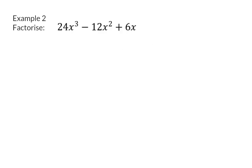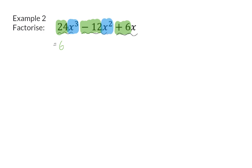Let's have a look at another example. In example 2, we now have three different terms in the expression, and we need to determine the biggest common factor for the three terms. We're going to start off by focusing on the coefficients — the constant values in front of each term — and determine their biggest common factor. For 24, 12, and 6, that common factor will be 6. Next, we're going to look at our variables. We have x to the power of 3, x squared, and then only x. That means for these three terms, we can at most take out an x, because the last term only has one x.